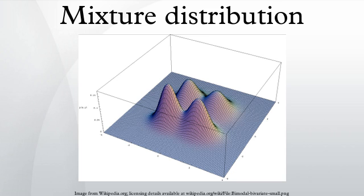The cumulative distribution function can be expressed as a convex combination of other distribution functions and density functions. The individual distributions that are combined to form the mixture distribution are called the mixture components, and the probabilities associated with each component are called the mixture weights.